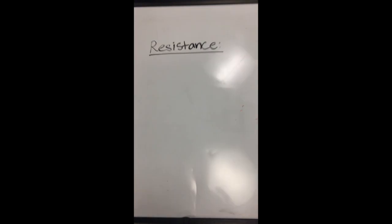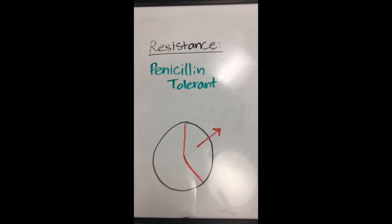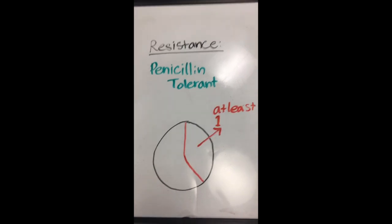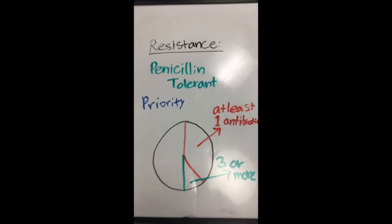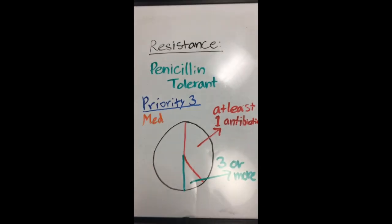Its resistance includes penicillin tolerance. In 2002, the Center for Disease Control reported 34% of strains to be resistant to at least one antibiotic, and 17% to be resistant to three or more antibiotics, making it a priority three medium-threat superbug.